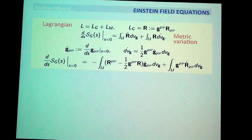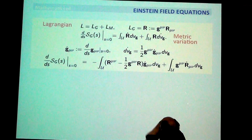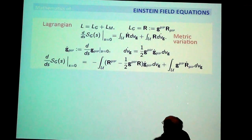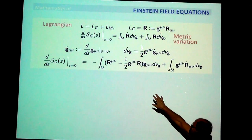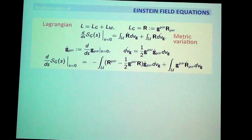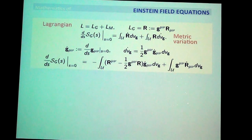Then you keep calculating your derivative of the action and you get two types of terms: terms which you can gather like R-mu-nu minus one-half g-mu-nu R times g-dot mu-nu, and another term which is g-mu-nu R-dot mu-nu. This first part is exactly what you want because it's the left-hand side of Einstein's equations. The second term vanishes because it's a perfect derivative, so it contributes zero.